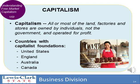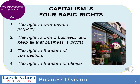There are many countries with capitalist foundations — the United States, England, and others. In order for capitalism to exist, there are four basic rights that must also exist in the nation. Number one is the right to own private property — you must have the right to buy and sell your property. Second, the right to own a business and keep all the business's profits to reinvest or compensate the owners. Third, the right to freedom of competition. And fourth, the right to freedom of choice — you can choose what you want to buy. Those are the four basic rights within capitalism.